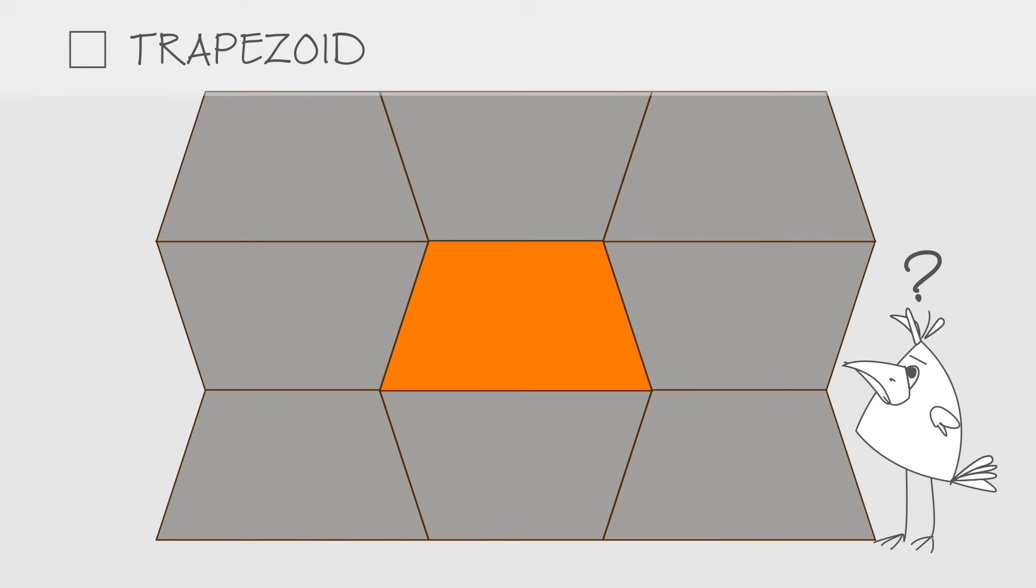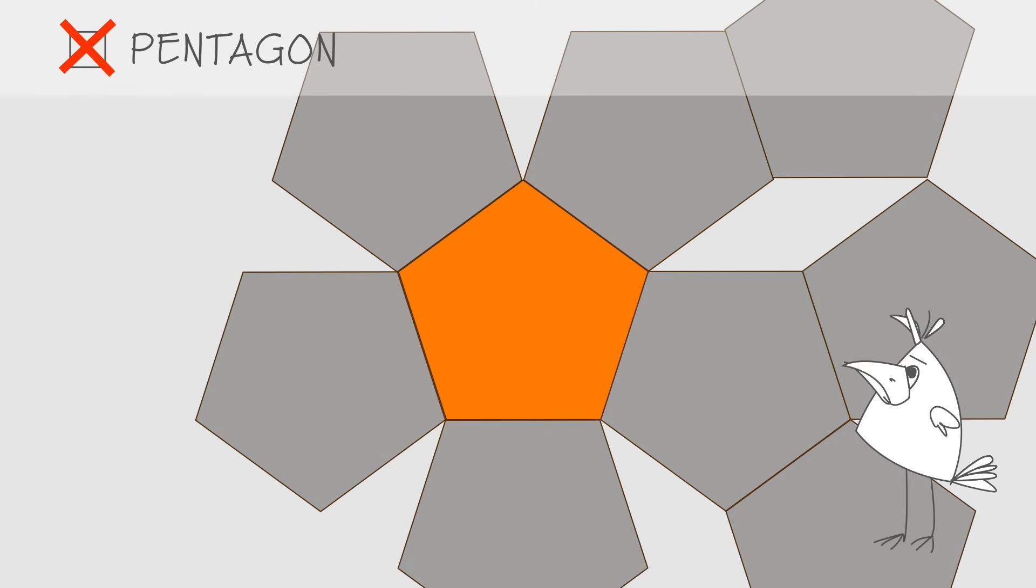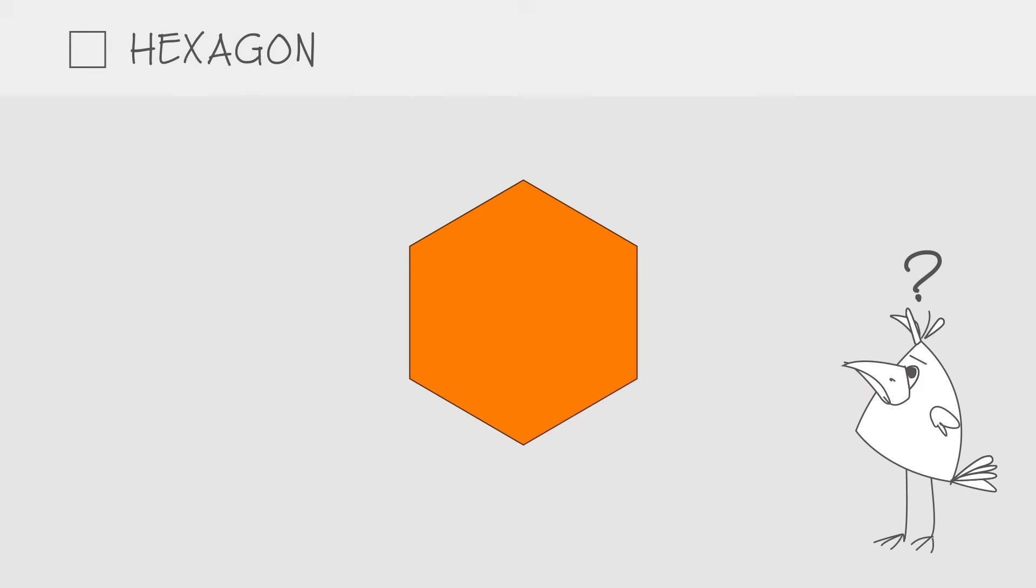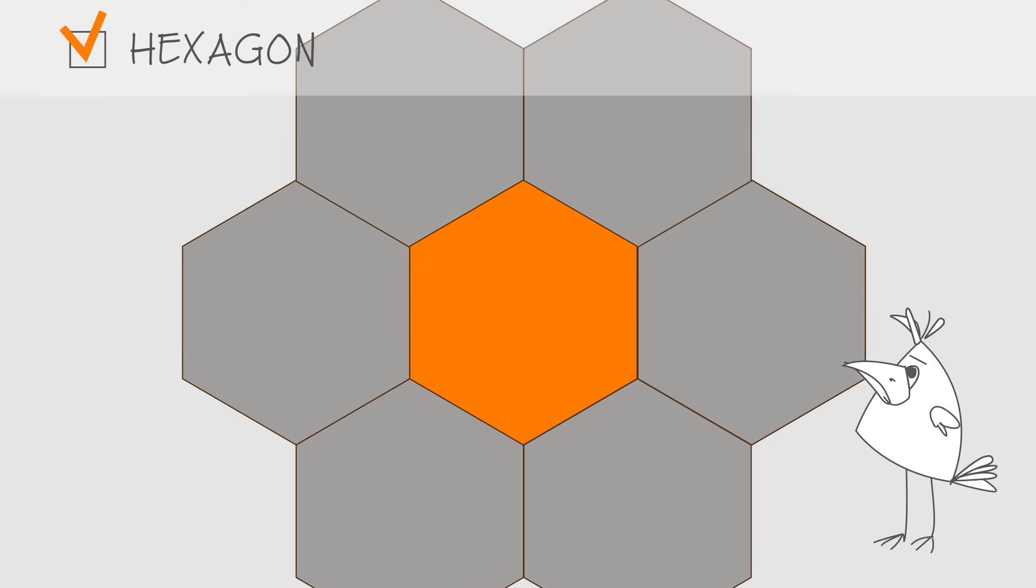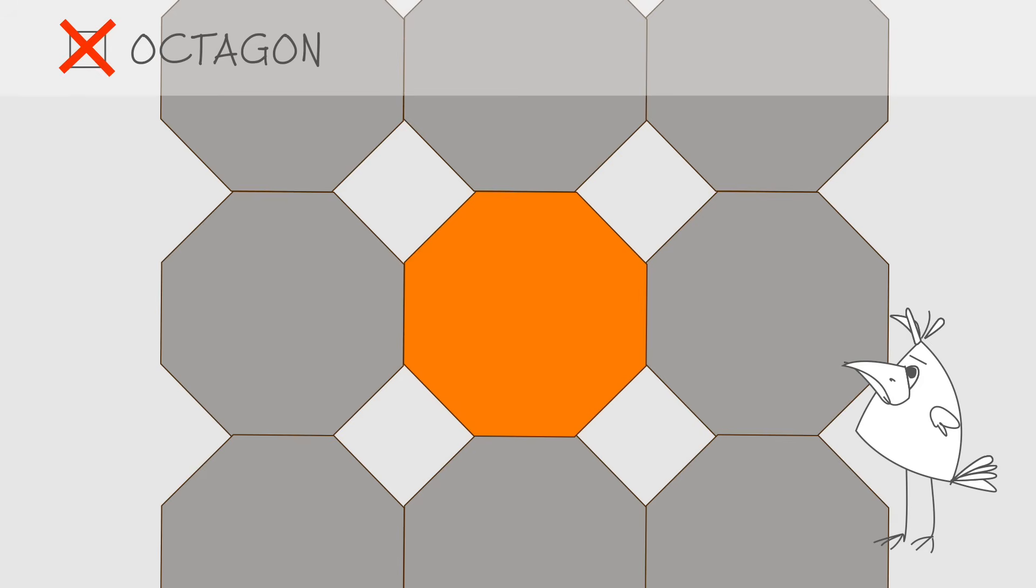Trapezoid? Yes, we can make it work, but also with some limitations. Pentagon? Nope. Hexagon? Absolutely, works beautifully. Octagon? Nope, doesn't work.